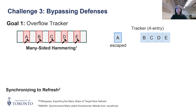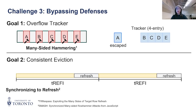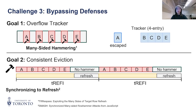For example, a four-entry tracker will evict one entry if five aggressors are hammered. Second, SMASH makes that escaped entry consistent by synchronizing hammering with mitigated refreshes. We deliberately create holes in the hammering pattern for refreshes to occur.